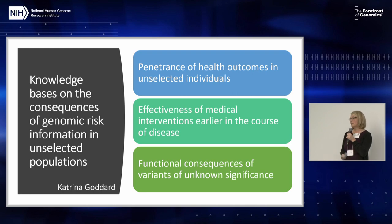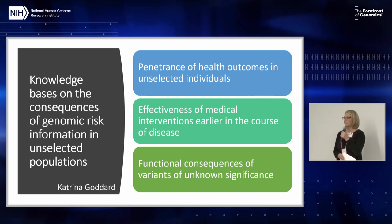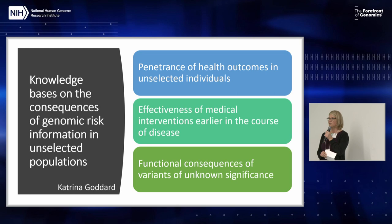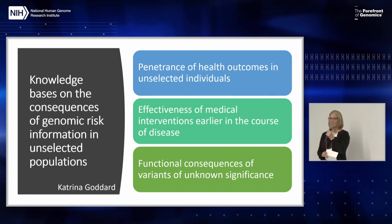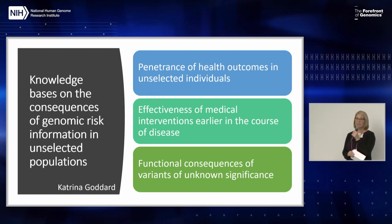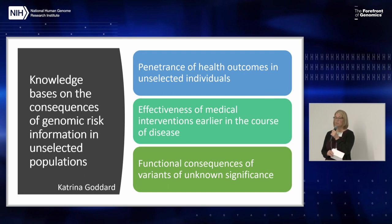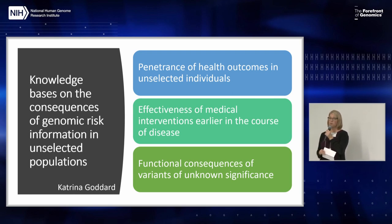The third thing is understanding the functional consequences of variants of uncertain significance. There are so many variants present in these genes, and it will be quite a task to look at each one. The development of large-scale assays and approaches that can be systematically applied to all variants in these genes — to get some estimate of functional consequences — is a really important tool going forward as one line of evidence to understand these variants.